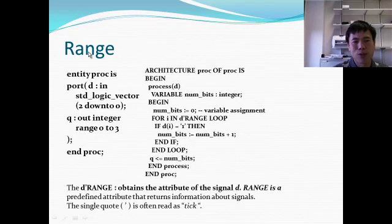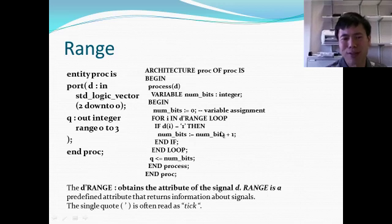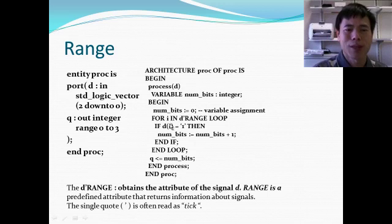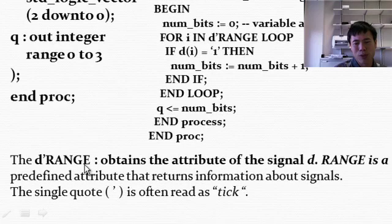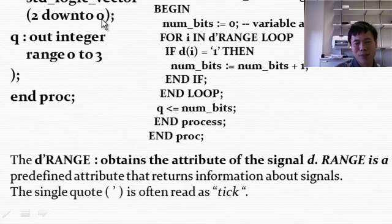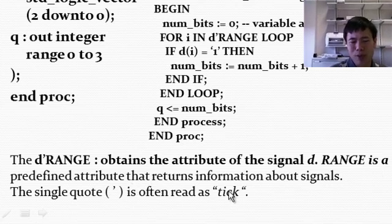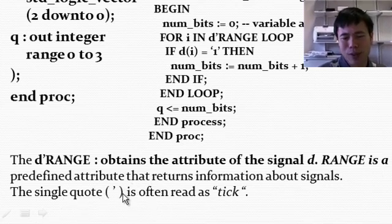First of all, let's take a look at the range. I take it from the basic basics, so I want to emphasize this for you to get started with your project part 2. The range means, for example, if I have a d variable that's the input signal, it's a standard logic vector 2 down to 0. Then the d tick range will specify the bits specified in d. In our example, the d range will have values starting from 0, 1, and to 2. So you will obtain the attribute of the signal d.range. It's a predefined attribute that retains information about the signals. The single quote is often read as tick.